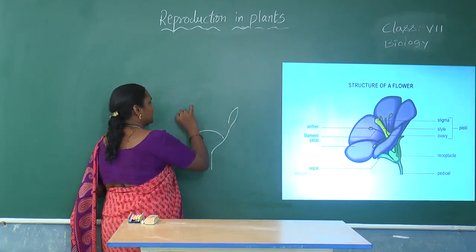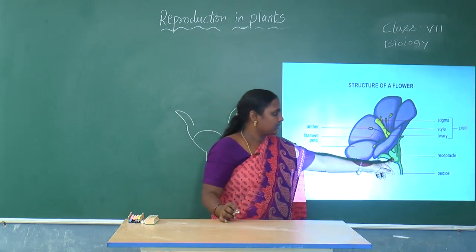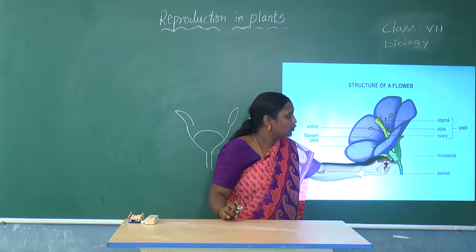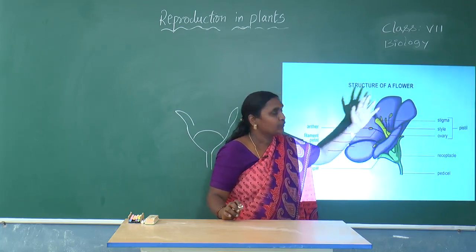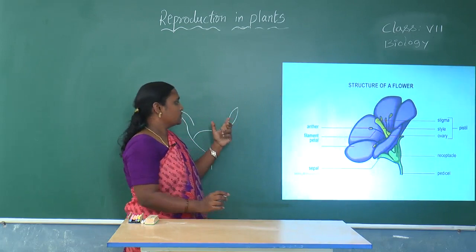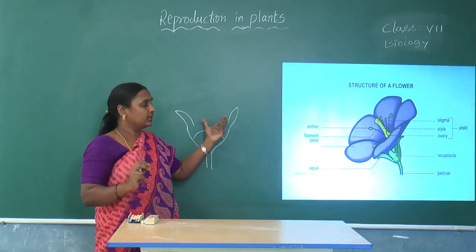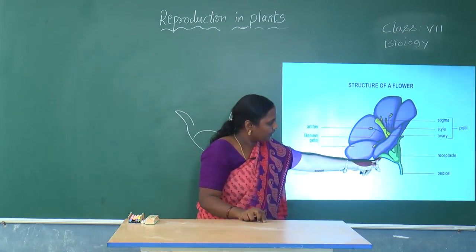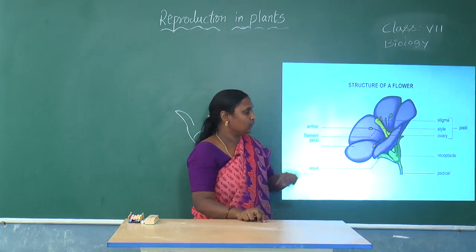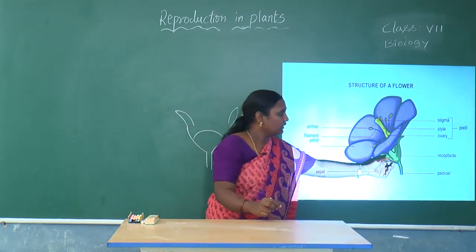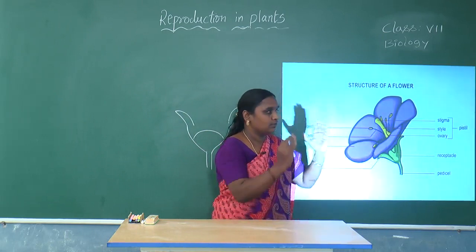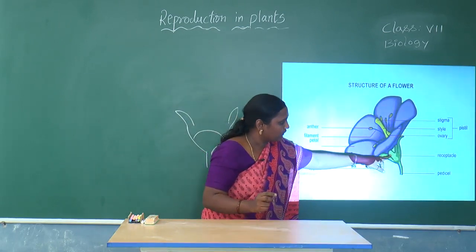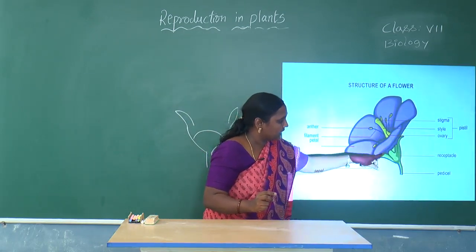The first whorl is called the calyx. The calyx is like a cup-like or tube-like structure, holding the rest of the three whorls together. It is mostly green in color and at the top it faces the petals. In the datura flower, you can see it is more forward, just like a tube-like structure, with a slightly leaf-like structure at the top.